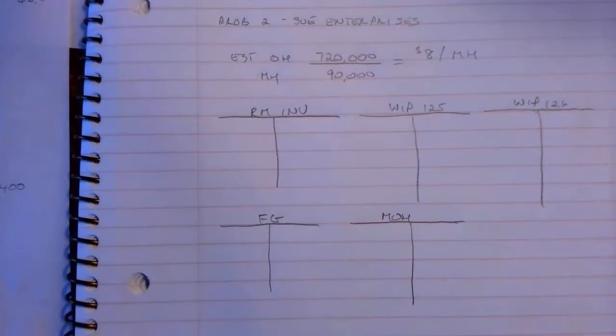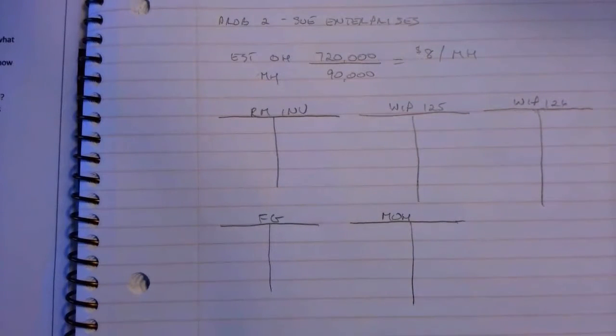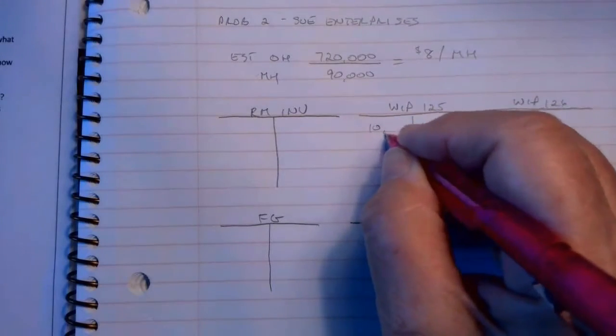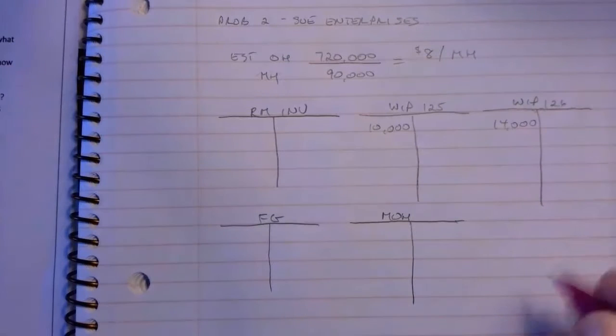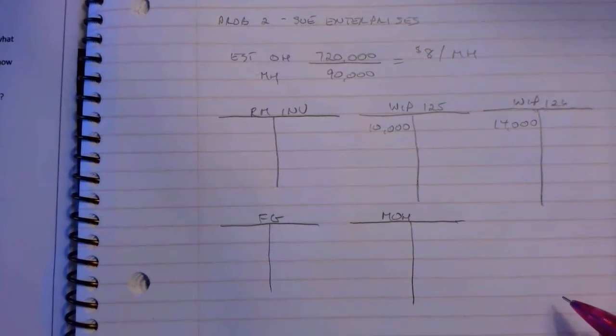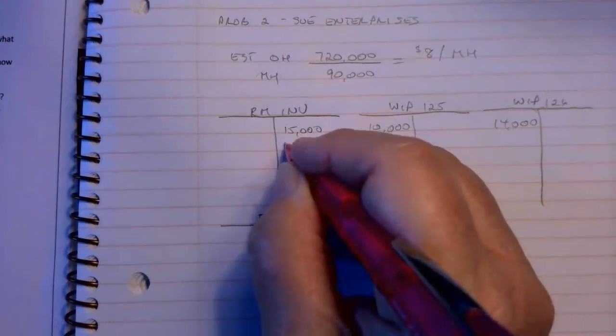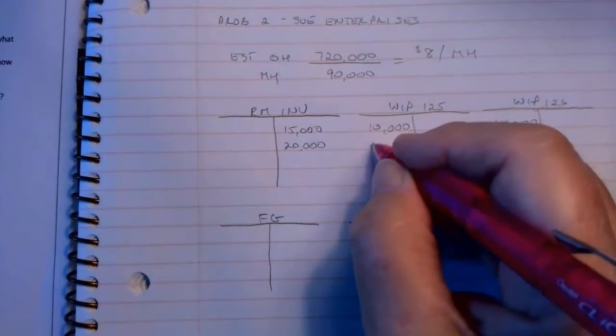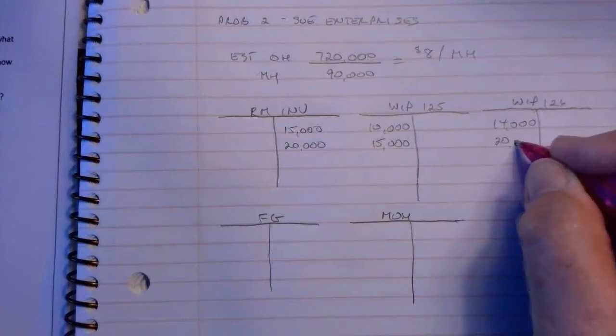What do we know from this? We've got work in process on August 1st, so that would be $10,000 for 125, $14,000 for 126, and the direct material cost that came out was $15,000 and $20,000. So that would come out of your raw material. $15,000 went into Job 125 and $20,000 went into 126.